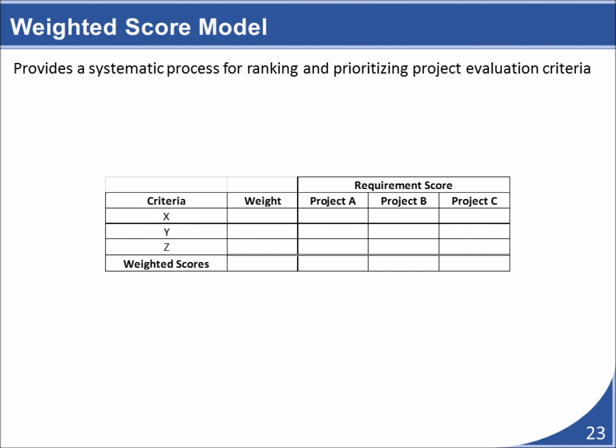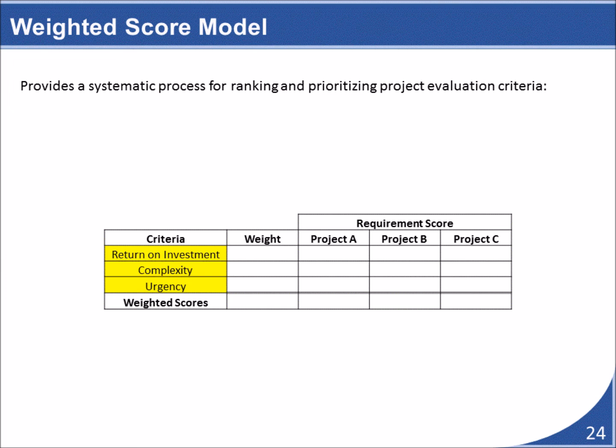Let's take a look at one more financial modeling concept: the weighted score model. This model allows us to compare multiple projects based on how much value we place on various comparison criteria. If we have three comparison criteria and do not value them equally, we can assign them weights. Suppose we have three projects and can only fund one — we need to create evaluation criteria, which would likely vary by organization.